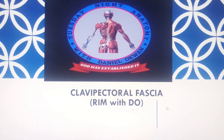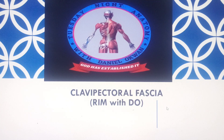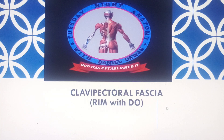The clavipectoral fascia is a strong, deep fascia found around the pectoral region. It extends all the way from the subclavius muscle — that muscle under the clavicle — down to the pectoralis minor muscle. Note: it is pectoralis minor, not major. This fascia also encloses these muscles.